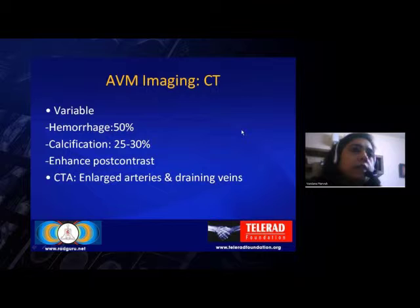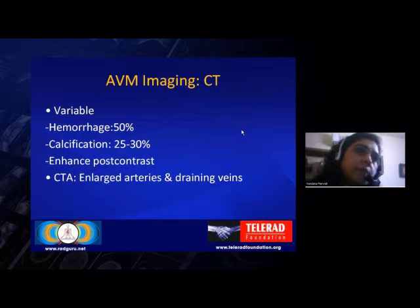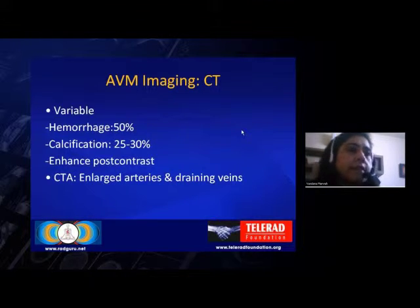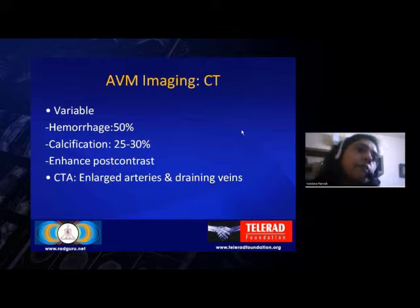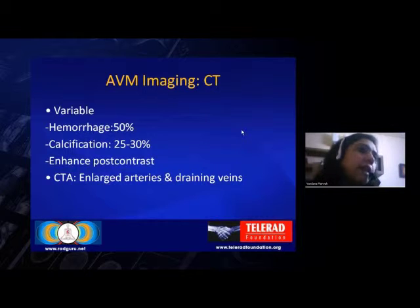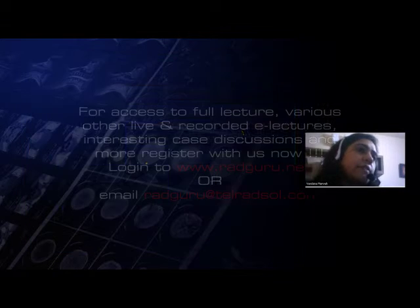CT findings in arteriovenous malformations are pretty variable. Hemorrhage is seen in about 50% of cases. Findings are often subtle on non-contrast CT — slight hyperdensity, some calcification, or mostly negative — and they may enhance slightly on post-contrast CT.